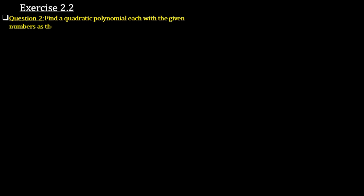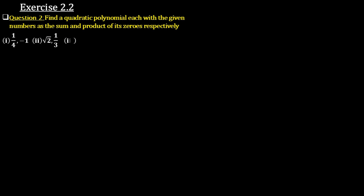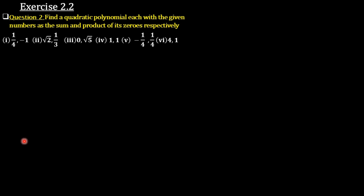Find a quadratic polynomial with given numbers as sum and product of its zeros respectively. So we have to find a quadratic polynomial with these numbers as sum and product of zeros.